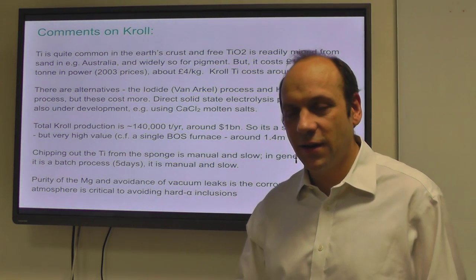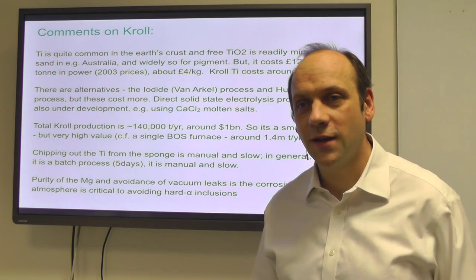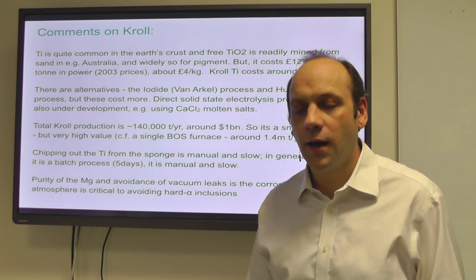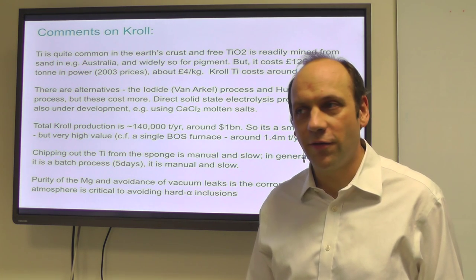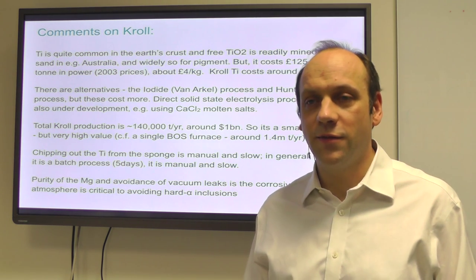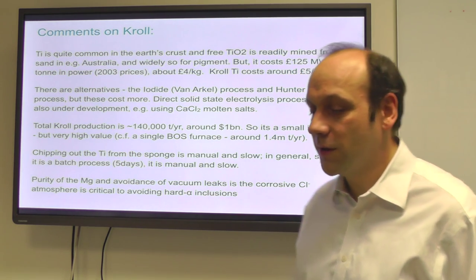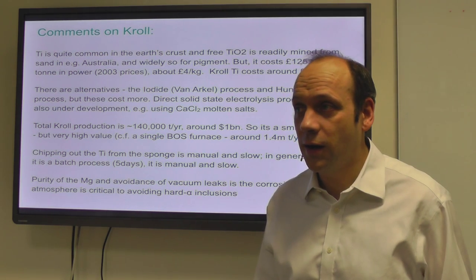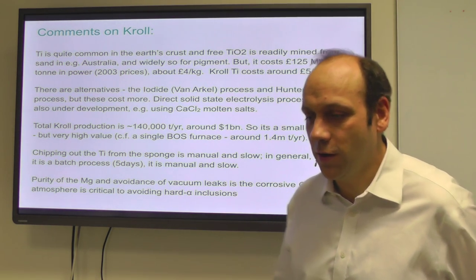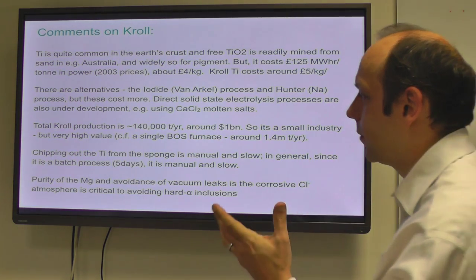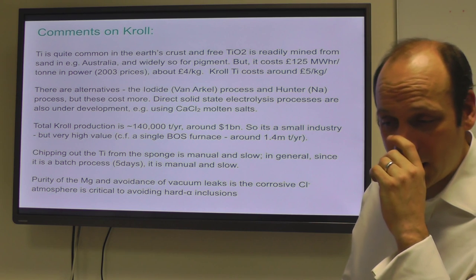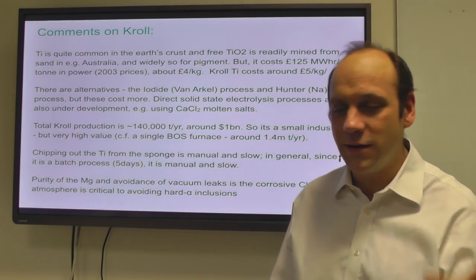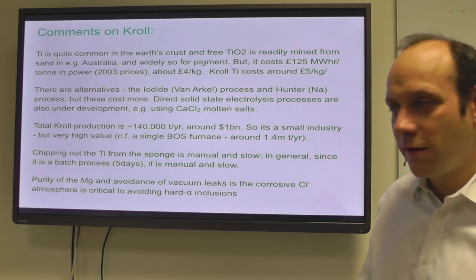There are alternative processes. There's a process using iodine instead of magnesium, and a process using sodium instead of magnesium, called the Van Arkel and Hunter processes. But they are using more reactive metals and therefore cost more. Early in the UK we built a Hunter plant that produced high-quality product, but eventually once the problems with Kroll vacuums were sorted out and Kroll ended up with a lower base price, the Hunter process was closed down. There are other processes under development. There's the Fray-Farthing-Chen process, the FFC process, that reduces TiO2 directly using calcium chloride molten salts.